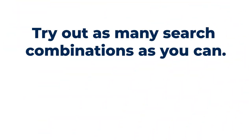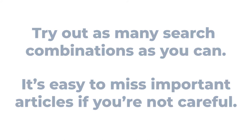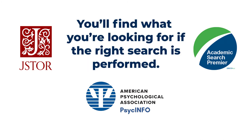When searching with your main concepts, always make sure to try out as many combinations as you can. It is easier to miss important articles and resources than one might think. Most of the databases you are going to be searching are vast, and it will take just the right combination of terms to find what you are looking for. But being able to identify and use main concepts in a search is a vital skill, one that puts you one step closer to being an expert searcher.